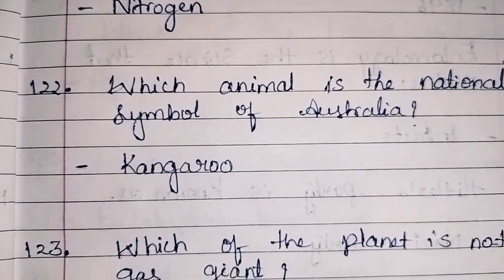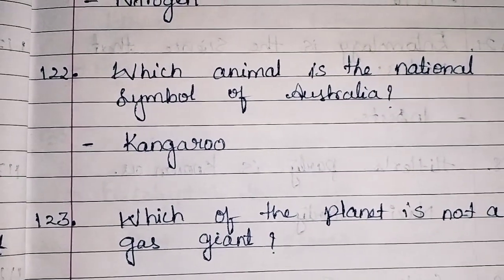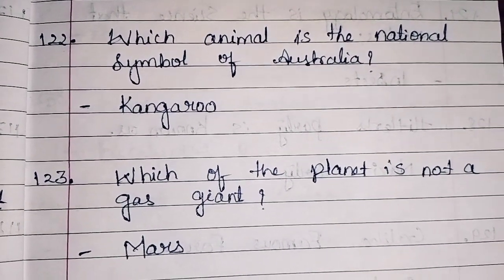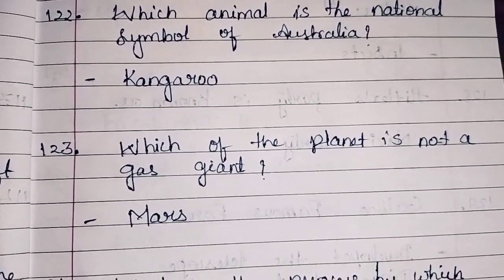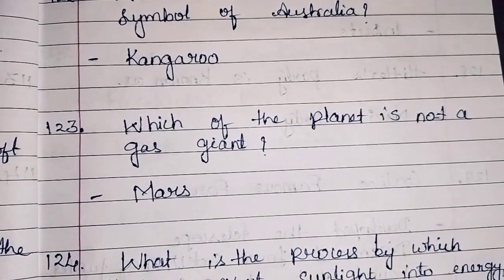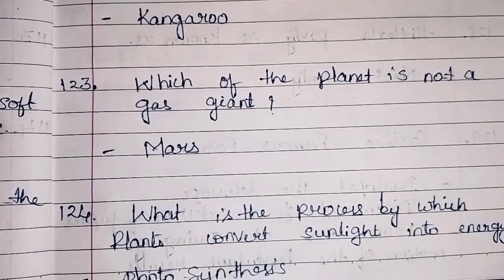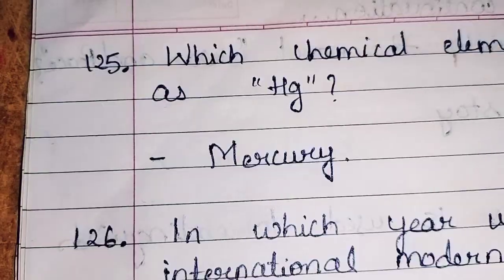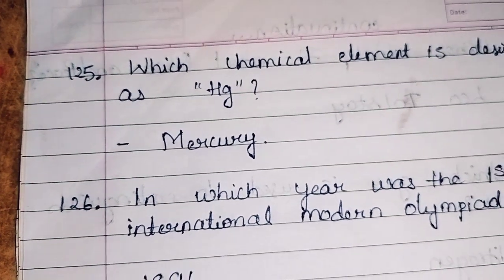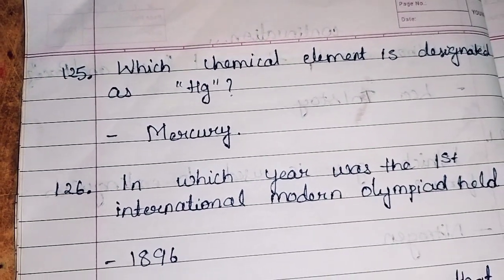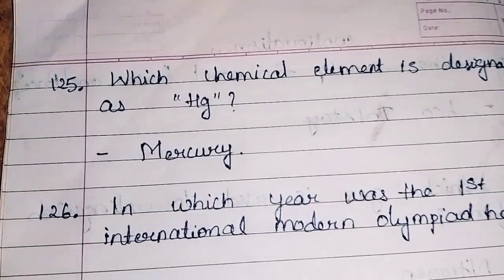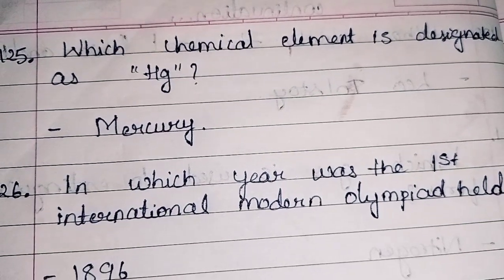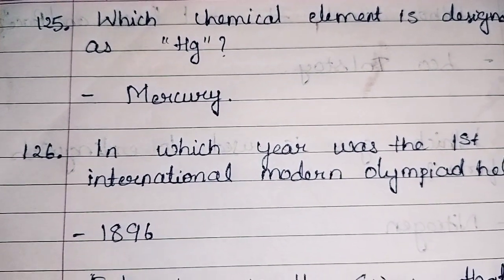Which planet is not a gas giant? It's Mars. What is the process by which plants convert sunlight into energy? It is photosynthesis. Which chemical element is designated as HG? It is mercury. In which year was the international modern olympiad held? It is 1896.